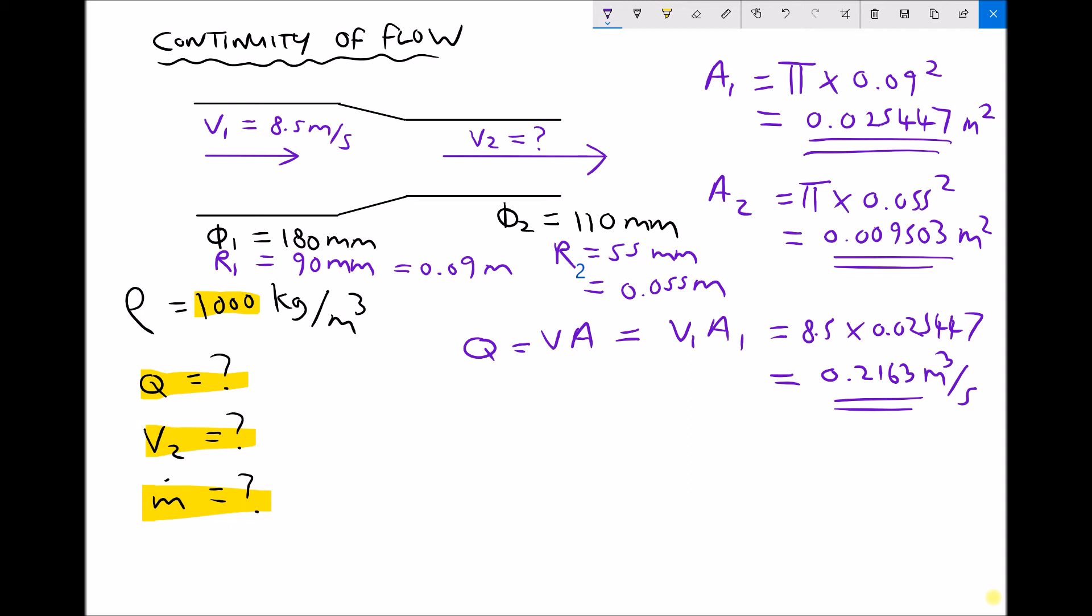Now to calculate V2 I have a choice. I can either use volume flow rate equals V2A2 or I could use V1A1 equals V2A2. But what I'm going to do as I know my volume flow rate is I'm going to use Q is V2A2. Therefore, the thing we're trying to find, V2, is Q divided by A2.